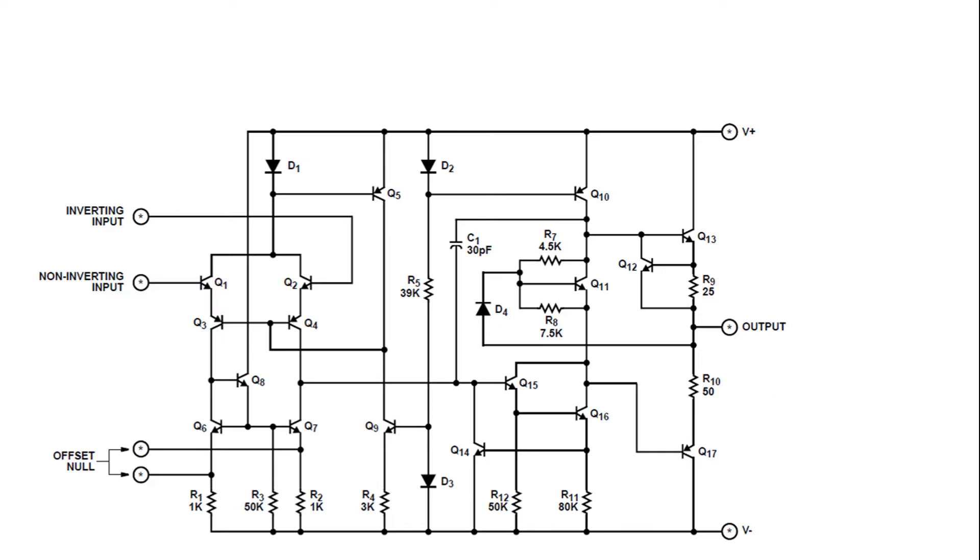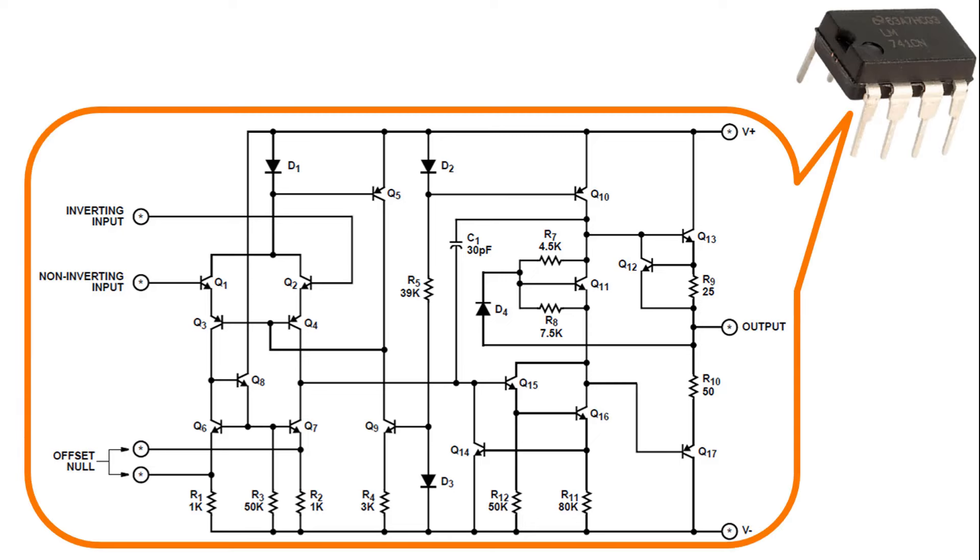When we look at the internal structure of the LM741 operational amplifier, we can see that there is a circuit consisting of resistors, capacitors, diodes, and transistors. In other words, this circuit has been minimized and fits into a small 8-pin IC. Thus, it has been made more useful.